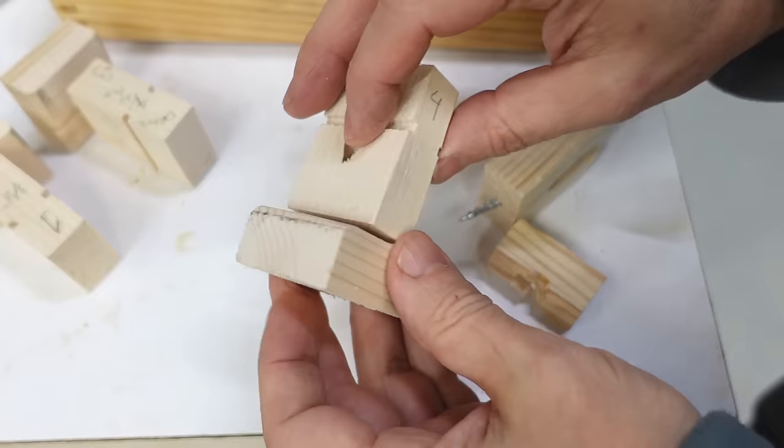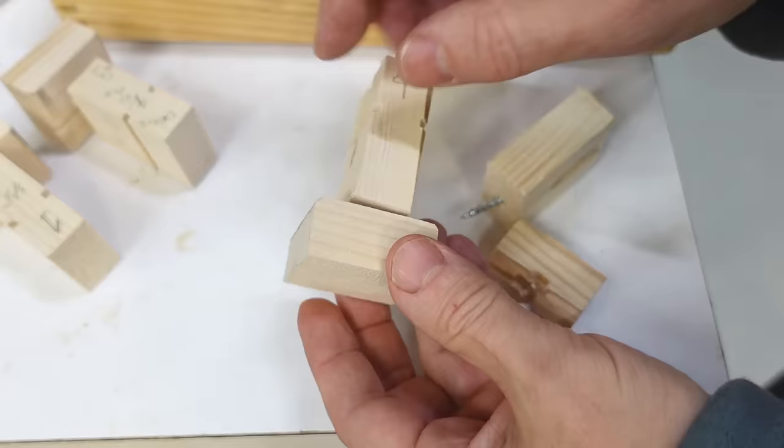And, you can see this piece is starting to crack here. So, definitely pulling out of the bottom part here. So, dowel joint wins then, right? Well, I got a lot more pieces to test still.